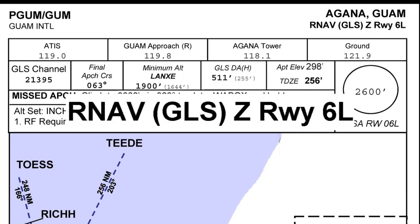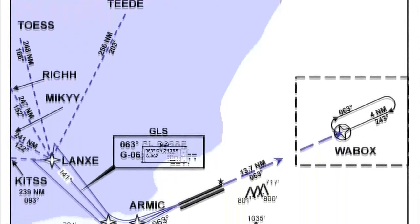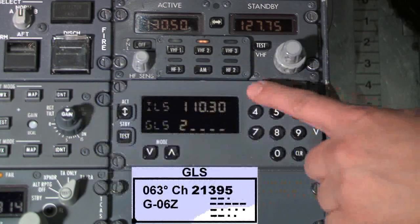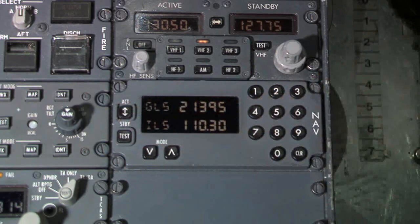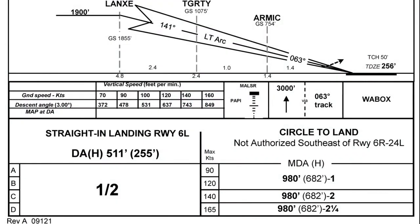Shown here is the GLS curved path approach plate for runway 6L in Guam. The GLS approach is identified with a unique 5-digit identifier, which is entered into the multi-mode receiver and made active. The inbound course is set to a heading of 063, which is standard for an instrument approach. Minimums on this approach are a decision height of 511 feet and half-mile visibility.